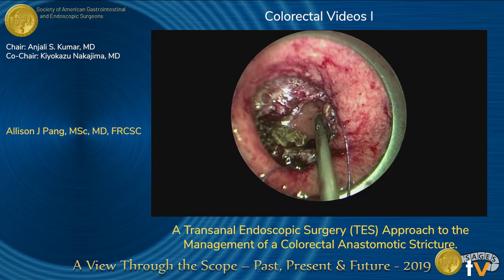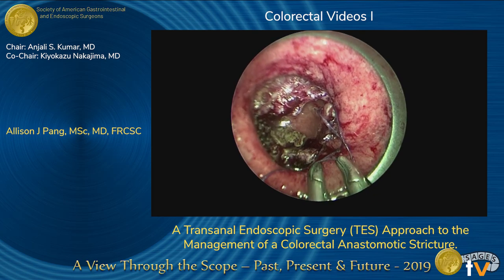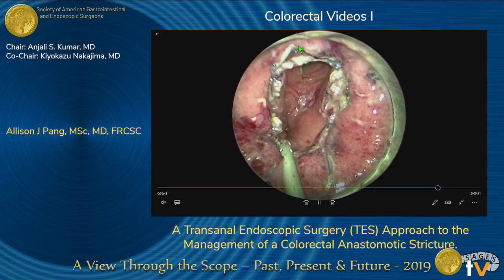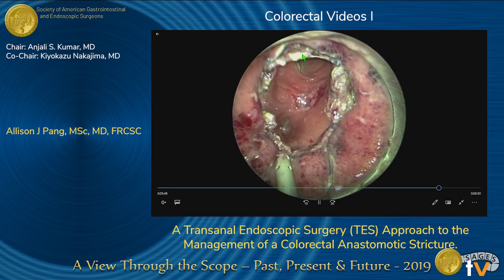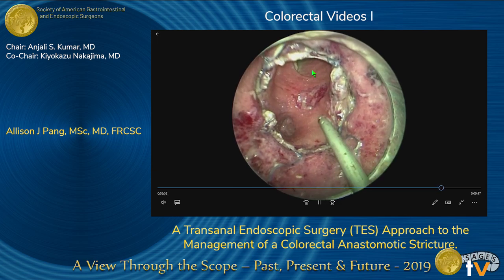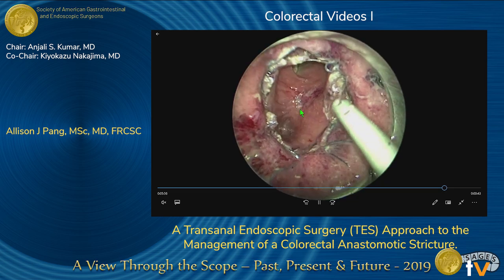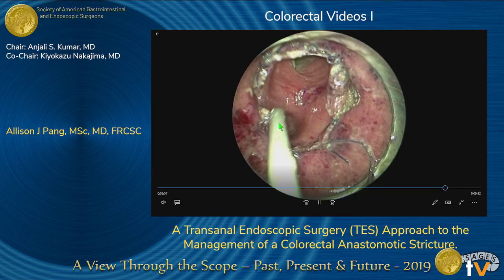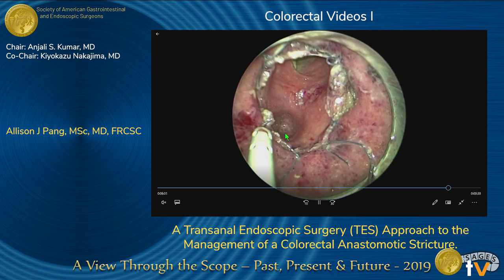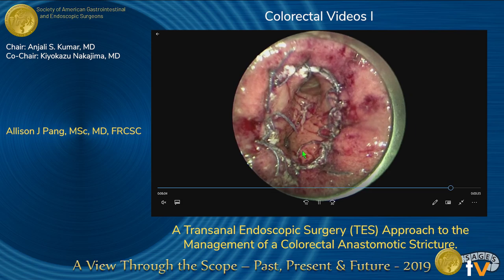Here we are almost done with the anastomosis. There are a few gaps still to close with interrupted sutures. Up at the top of the screen you are looking into the lumen of the proximal colon — this is just a small diverticulum proximal to the anastomosis. And this is the complete anastomosis in the end.